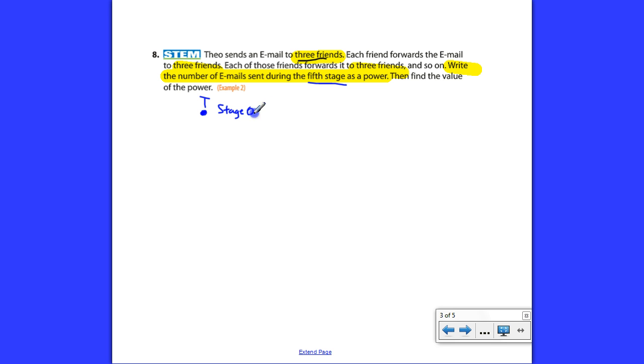Put a dot right here, please, and we'll put a T that stands for Theo, and we're going to call this stage zero. This is asking for the fifth stage of this particular problem. So if that's stage zero, let me show you what stage one would be. It said that Theo sent three emails, so continue the drawing kind of like mine. He sends three emails or email to three different people. So let's call this stage one. In stage one, he had sent three emails, and three is the same thing as three to the power of one.